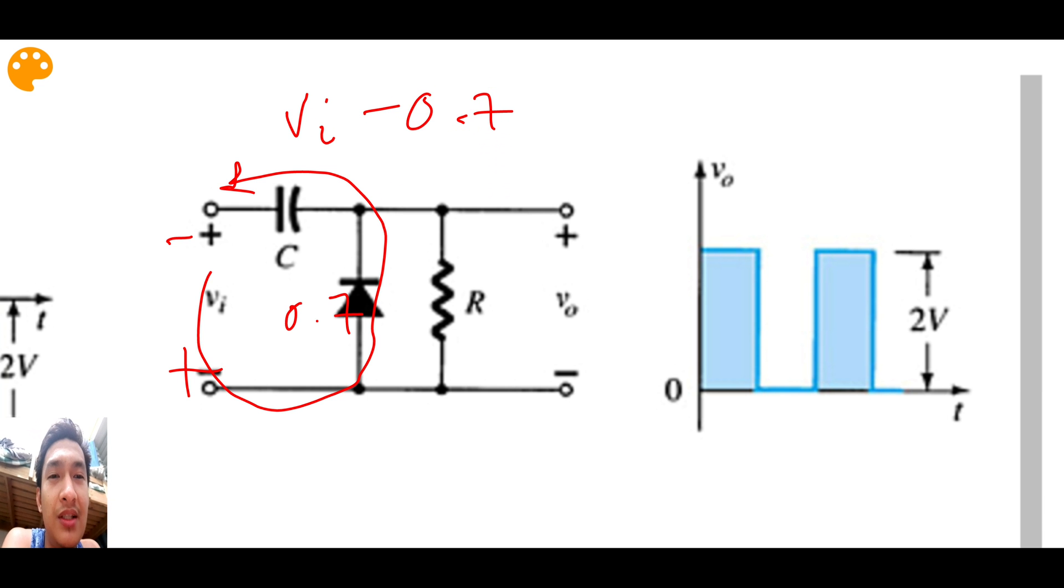This is given that the diode is a silicon diode. However, for a germanium diode you're going to use 0.3. So if this is a silicon diode, your capacitor gets charged by VI minus 0.7, and then your VO, which is this part here, is equal to negative 0.7.